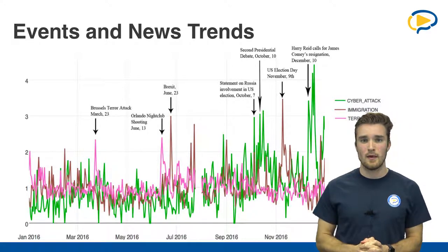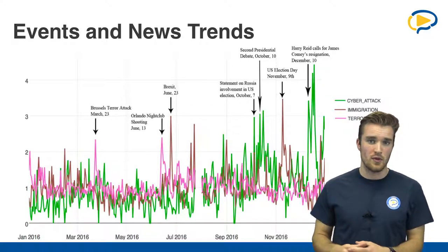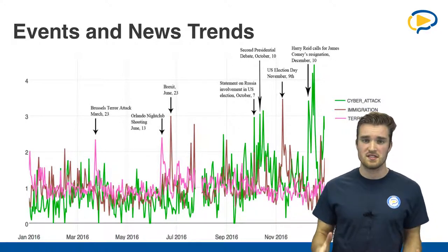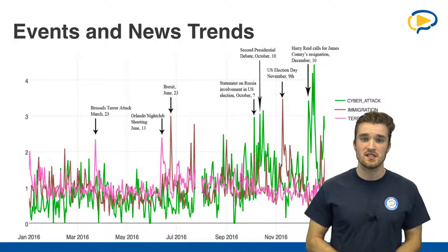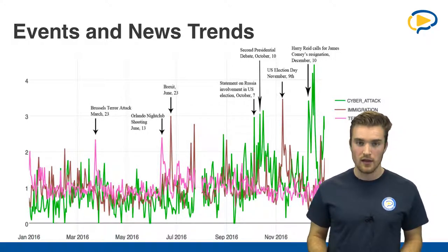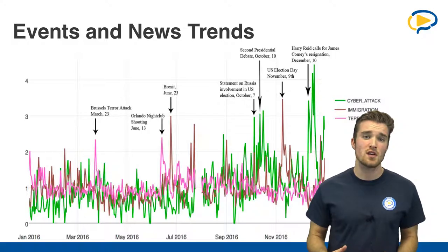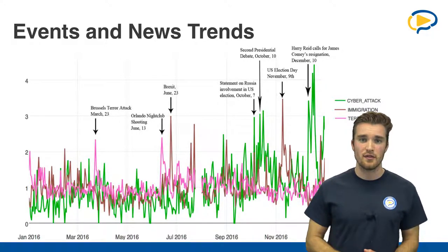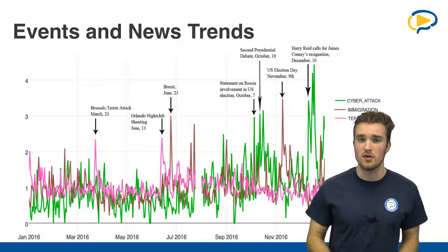Look at the theme of immigration — we can see that news outlets talk more about immigration when there was the Brexit. And incidentally, this theme also got a bigger trajectory during the US election. The green graph shows the theme cyber attack. Whenever you look at the spikes in this theme, this doesn't necessarily mean that there actually was a cyber attack. It rather means that during this period of time, there was an increase in news articles that reported about a cyber attack.